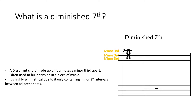What's a diminished 7th chord? Well, it's a dissonant chord made up of four notes a minor third apart. So we've got this example of a diminished 7th chord here: B, D, F natural and A flat. All of those notes are a minor third apart from each other.